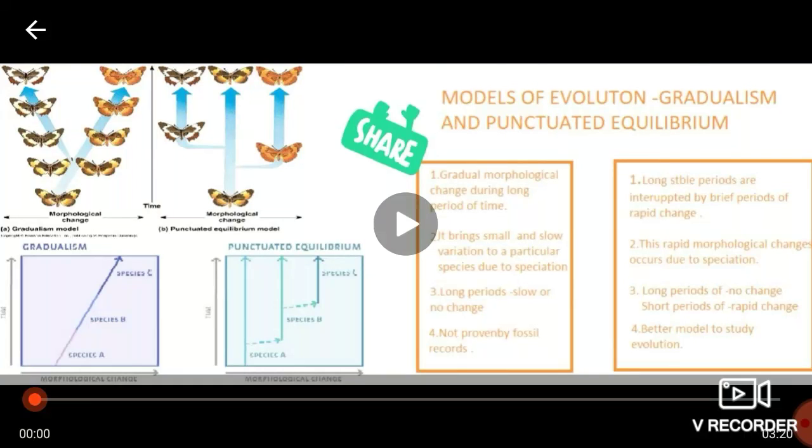So in gradualism, gradually species A evolved then species B evolved and then species C evolved. But in case of punctuated equilibrium due to brief periods of rapid change, first species A then species B then suddenly species C that is completely new species formed. So this is all about the models of evolution.